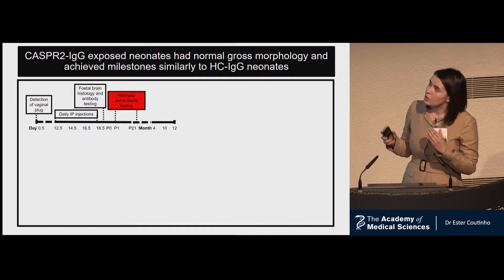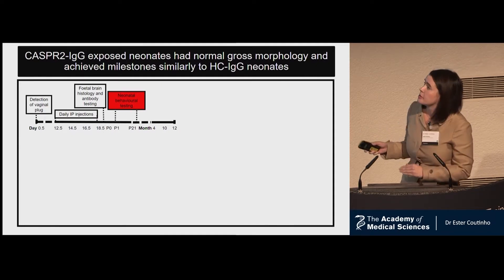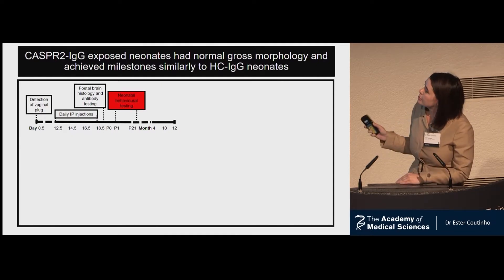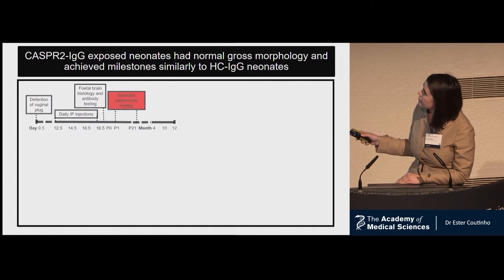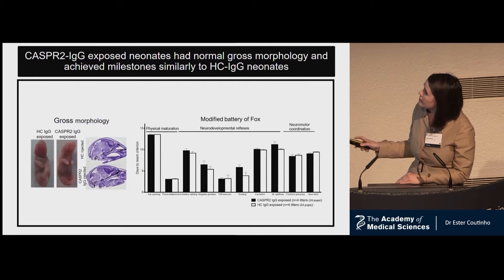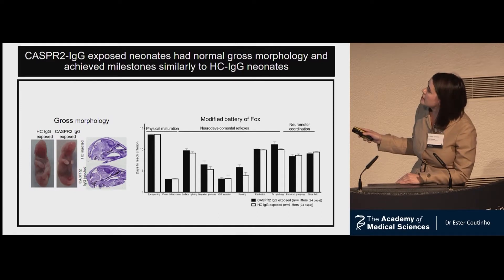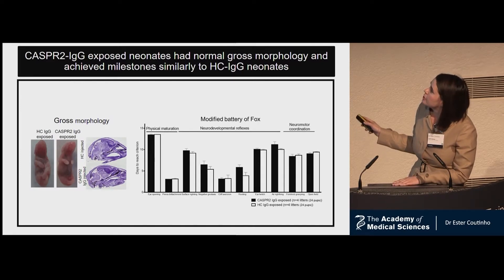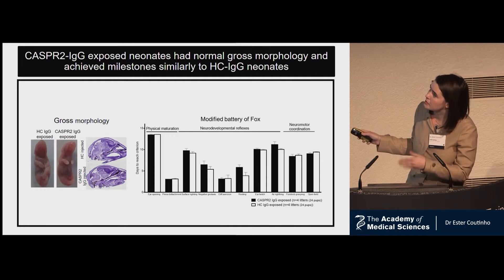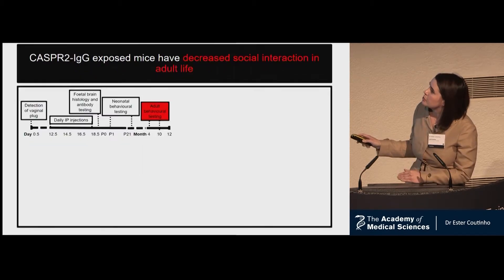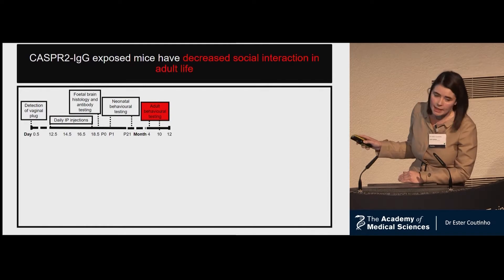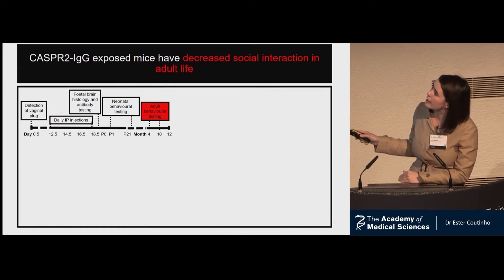Looking at the consequences of this exposure: in neonates, there were no gross morphological abnormalities between the groups, and when tested in a wide battery of neurodevelopmental outcome tests, there were no differences. But when we tested the animals again during adult life, at months four to ten, there were striking findings.